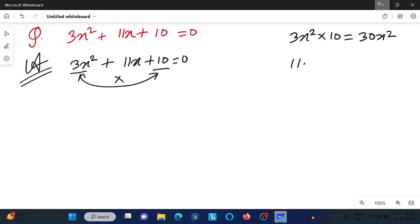Then 11x we can write as 7x plus 4x. When we multiply 7x into 4x, that's 28x square. That's not equal to 30x square, so this doesn't work.